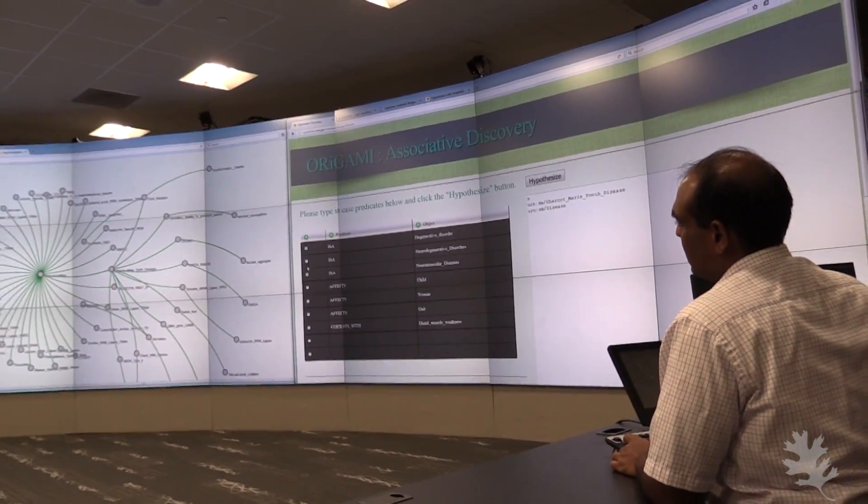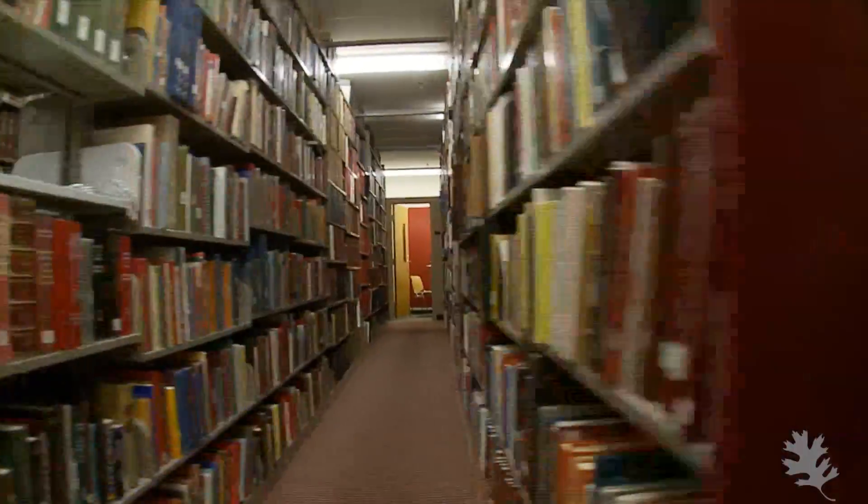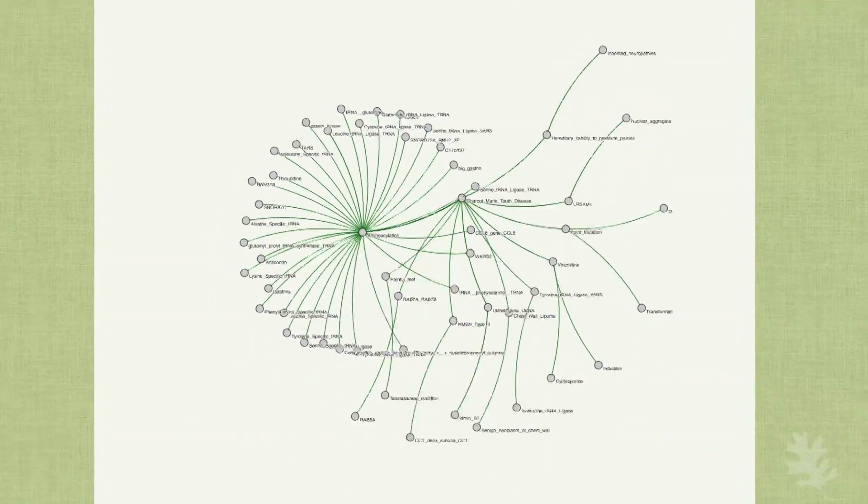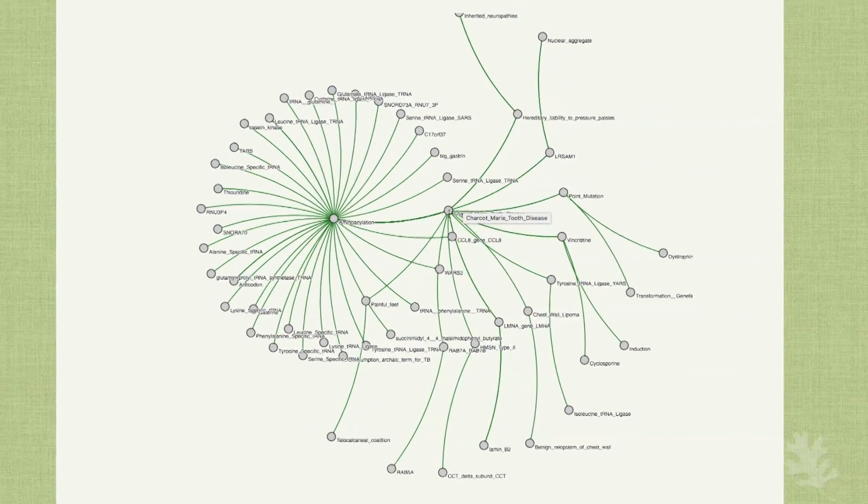With Origami, every time you ask a question, you're going through 70 million publications. You're literally mixing and matching what each paper publishes as a nugget to come up with something that's meaningful to your particular case. And that's the difference between what a computer can do best versus a human can do best to help the humans do better at what they do.